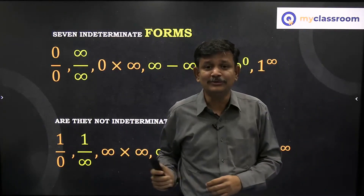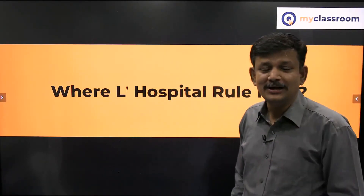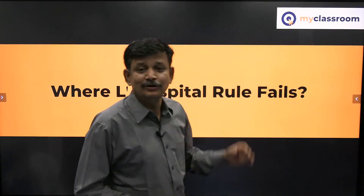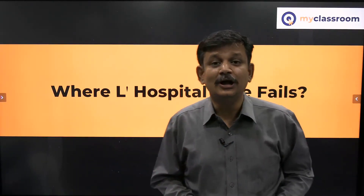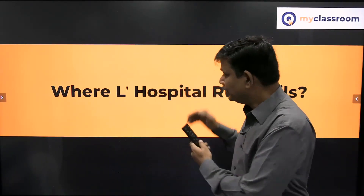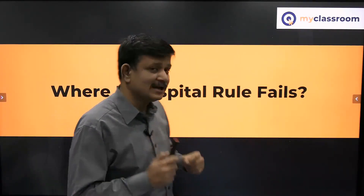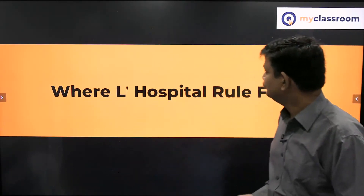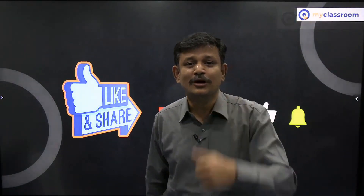In the next section we will be looking at where L'Hospital's rule fails. L'Hospital's rule states that in 0 by 0 form or infinity by infinity form, you can differentiate numerator and denominator separately. Keep commenting in the chat box with an example where you think L'Hospital's rule fails. If you like the video, like it, subscribe, and see you all soon.